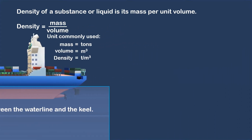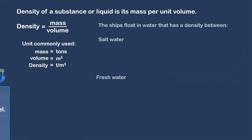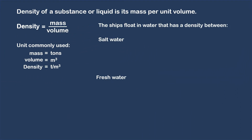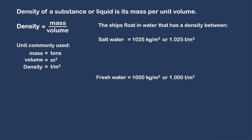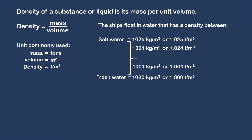Ships always float in water that has a density between saltwater and freshwater. The saltwater density is 1025 kilograms per cubic meter or 1.025 tons per cubic meter. For freshwater, the density is 1000 kilograms per cubic meter or 1.0 ton per cubic meter. Water densities that lie between these two extremes are called dock water.